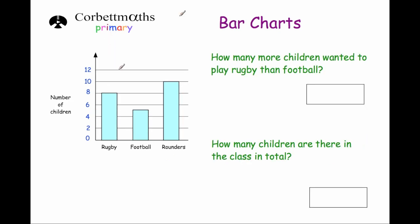The next part of the question: how many more children wanted to play rugby than football? Rugby has 8 children, football was 5. So if we do 8 take away 5 we'll see how many more wanted to play rugby, and 8 take away 5 is 3.